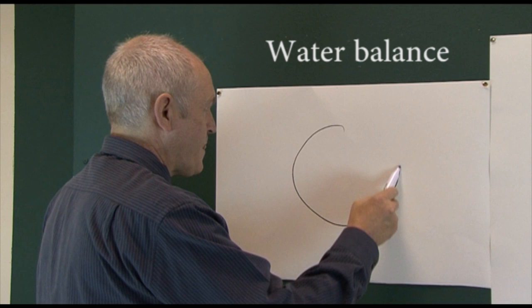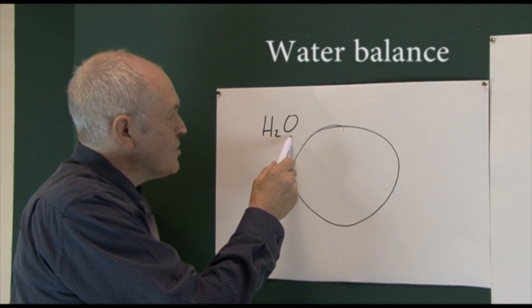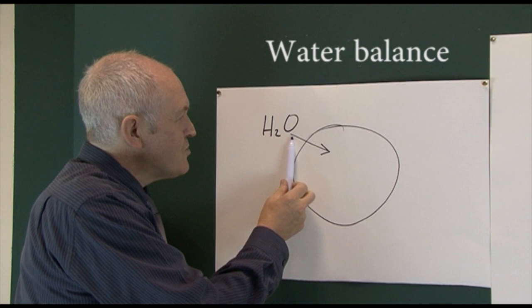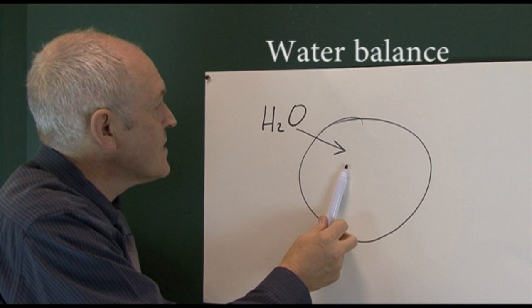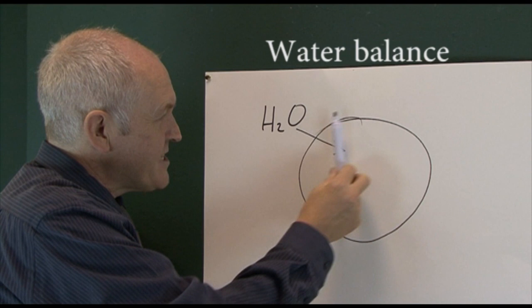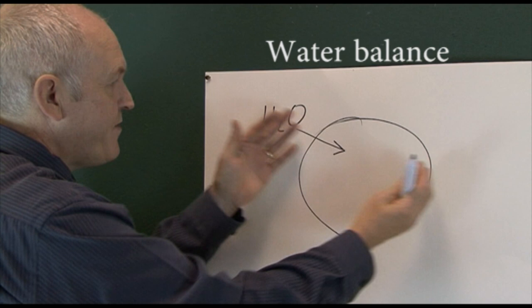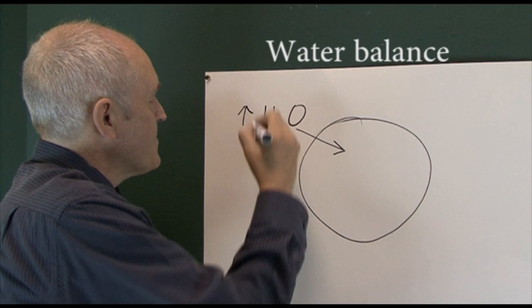Here we have any cell of the body. If there's too much water outside the cell, osmosis will mean that water will tend to go into the cell. Osmosis is the movement of water across a semi-permeable membrane from a watery area to a less watery area - it's a watering-down phenomenon. So if there's too much water here, water will move into the cell, the cell will become over-hydrated, fill up, and eventually the cell will simply burst, and that will kill the cell.